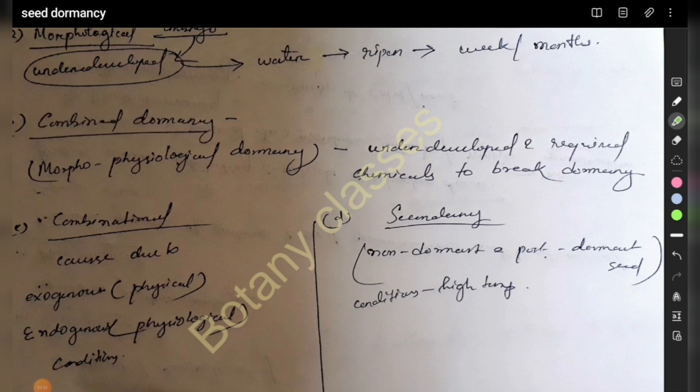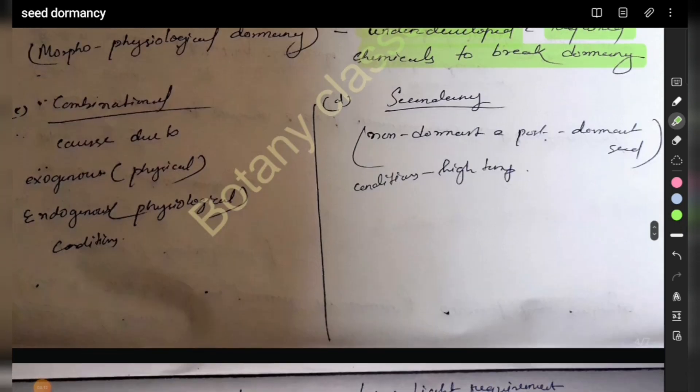Combined dormancy is morphophysiological. The embryo is underdeveloped or requires chemicals to break germination. There are morphological requirements, chemical requirements, and physiological requirements. Then there are all types of combination and secondary.